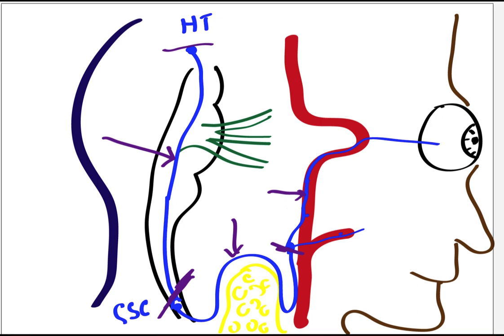Now you can start thinking about the different structures and how to localize those. Any pathology in the midbrain — you start looking for other signs of midbrain involvement such as a third nerve palsy or a fourth nerve palsy. If somebody has a sixth nerve palsy and a Horner syndrome, you start thinking of the pons. If the sympathetic fiber is involved in the medulla, this very often leads to a full lateral medullary syndrome, which is also called Wallenberg syndrome.